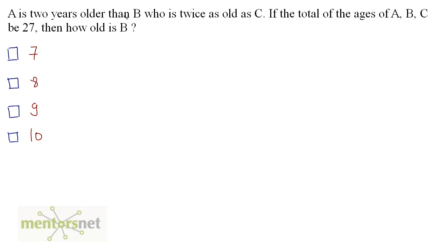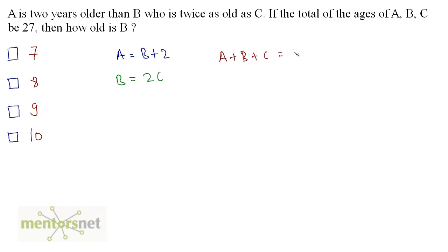So A is 2 years older than B, so I can write A is equal to B plus 2. B is twice as old as C, so B equals 2C. If the total of the ages of A, B and C be 27, so A plus B plus C is equal to 27. So B is what?